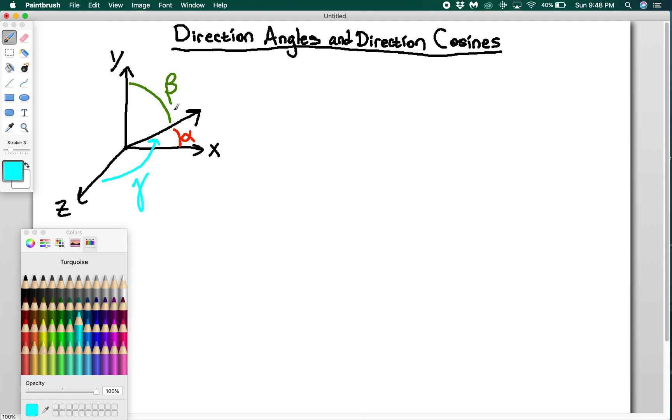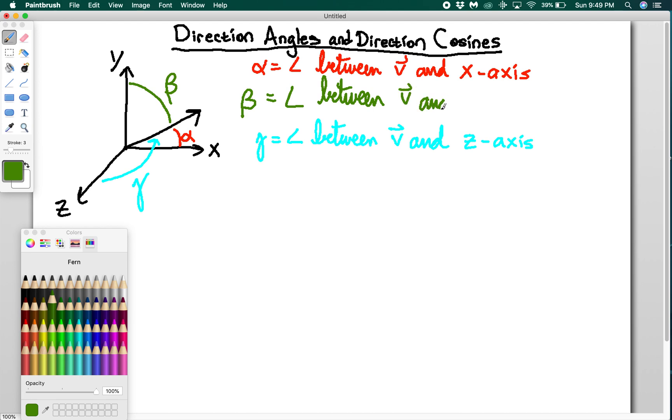So those are our three direction angles. Gamma is the angle between your vector v and the z-axis, alpha is the angle between v and the x-axis, and beta is the same thing but between v and the y-axis.